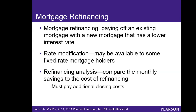Mortgage refinancing is paying off an existing mortgage with a new mortgage that has a lower interest rate. Sometimes when you first get your mortgage your credit wasn't that great and you had to pay a higher interest rate, but after three or four years of working on your credit and improving your credit score, it makes sense to refinance and obtain a lower interest rate, which will lower your monthly payment. Rate modifications are also available to some fixed-rate mortgage holders — you can talk to your mortgage company and they will reduce your rate because of your financial situation, such as if you lost your job.